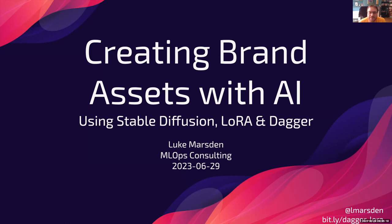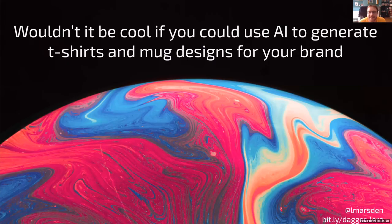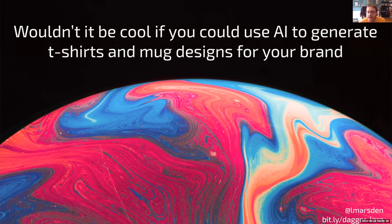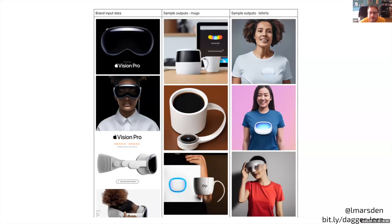So basically where this talk comes from is, wouldn't it be cool if you could use artificial intelligence to generate T-shirts and mugs for your brand or pretty much anything, any brand asset that you might want, like stock photography for your website or all sorts of things.